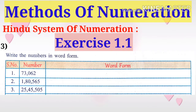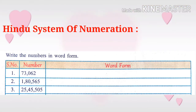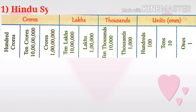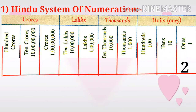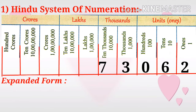Now take an example from Exercise 1.1: write the numbers in word form. First problem: seventy three thousand zero sixty two (73,062). To write the number in word form, first we have to write the given number from right to left in the place value chart: 2, 6, 0, 3, 7.